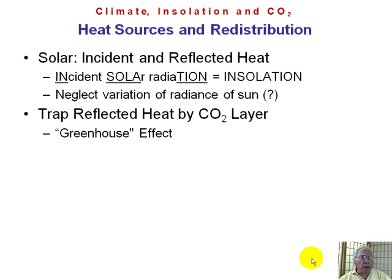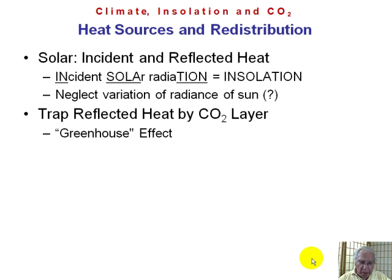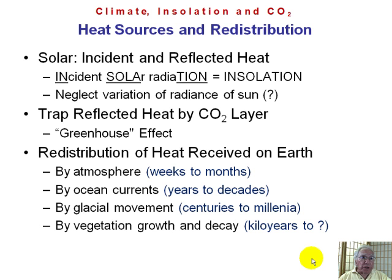So although the sun is the only source of heat, it comes in two flavors: incident and reflected. There is another interesting complication — once this heat is received on the Earth, it gets redistributed to different parts of the Earth by the atmosphere, by the ocean currents, and by glacial movement.